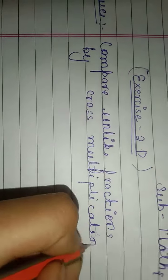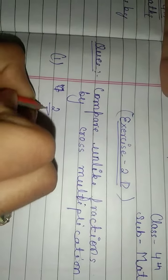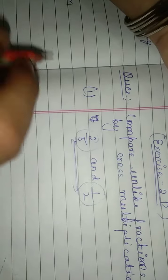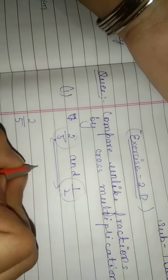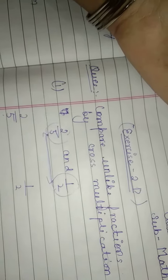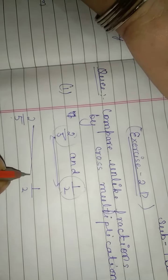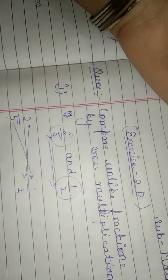So first of all I will take an example. The example is: compare 2 upon 5 and 1 upon 2. These are unlike fractions because both have different denominators. So we have to compare them by cross multiply — cross multiply means here it is 2 upon 5 and here it is 1 upon 2. So 2 multiplied by 2, and 5 multiplied by 1.